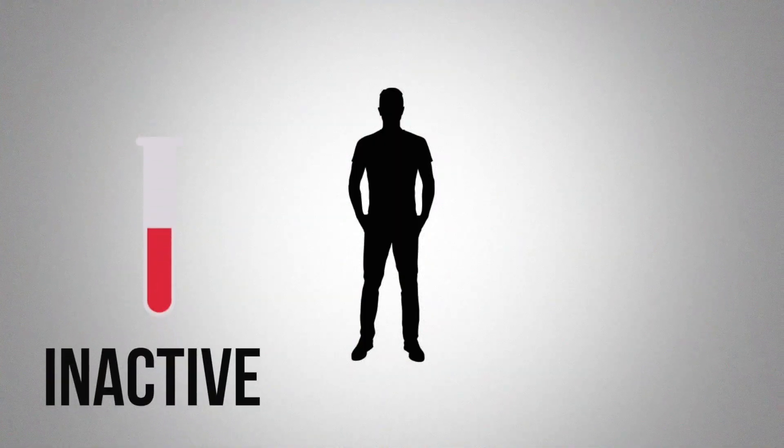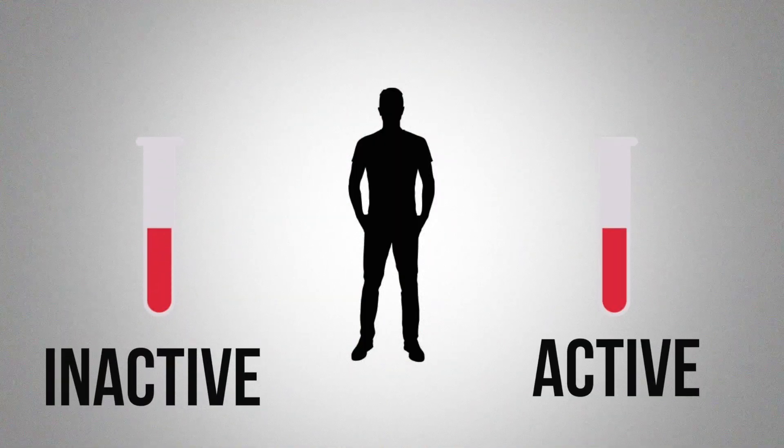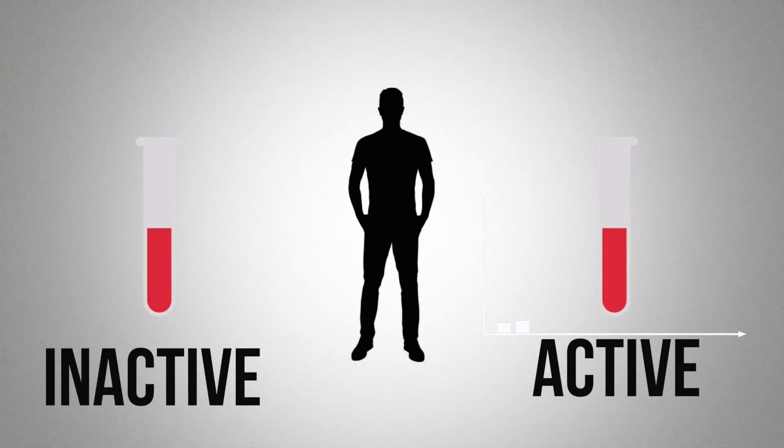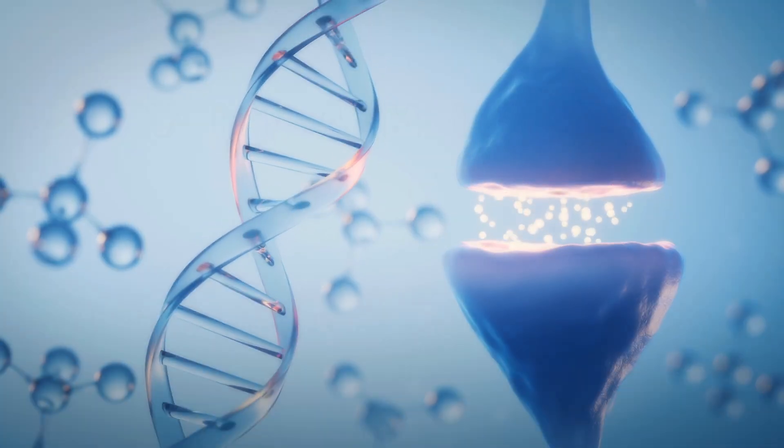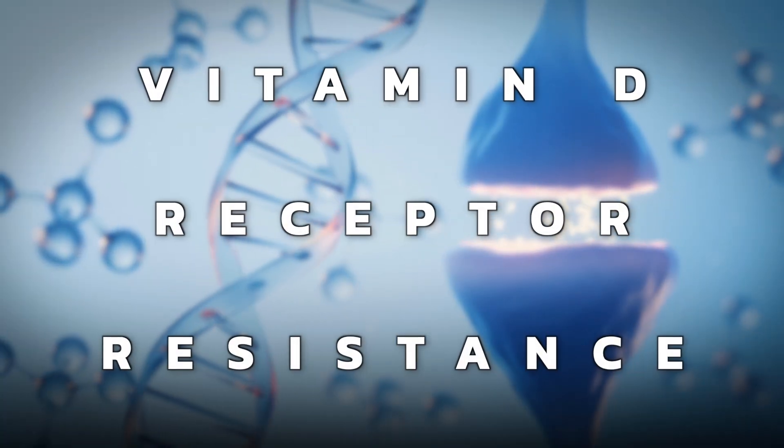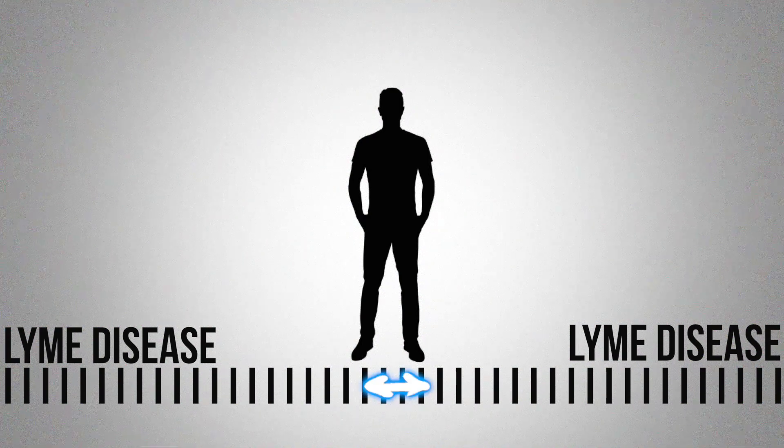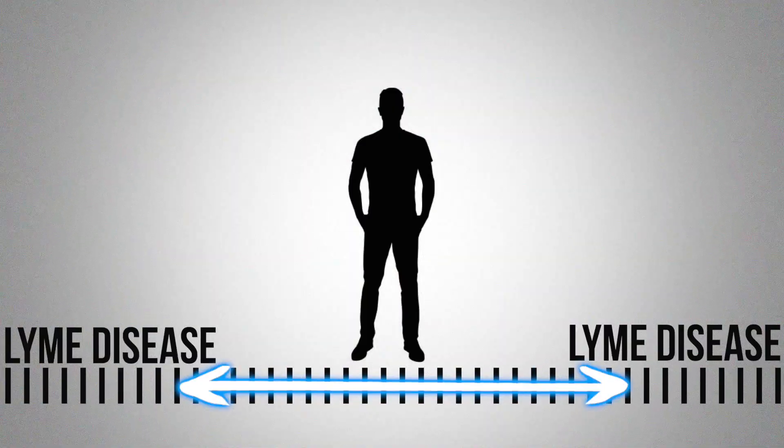When you get a blood test for vitamin D, usually they test the inactive version. But if you ever check your active version of vitamin D, sometimes that's actually even higher just because of the compensation of what your body's trying to do to push through and override this vitamin D receptor resistance. And so if you ever get that blood test done and the doctor sees that your vitamin D levels are high, what are they going to tell you? Make sure you don't take vitamin D.